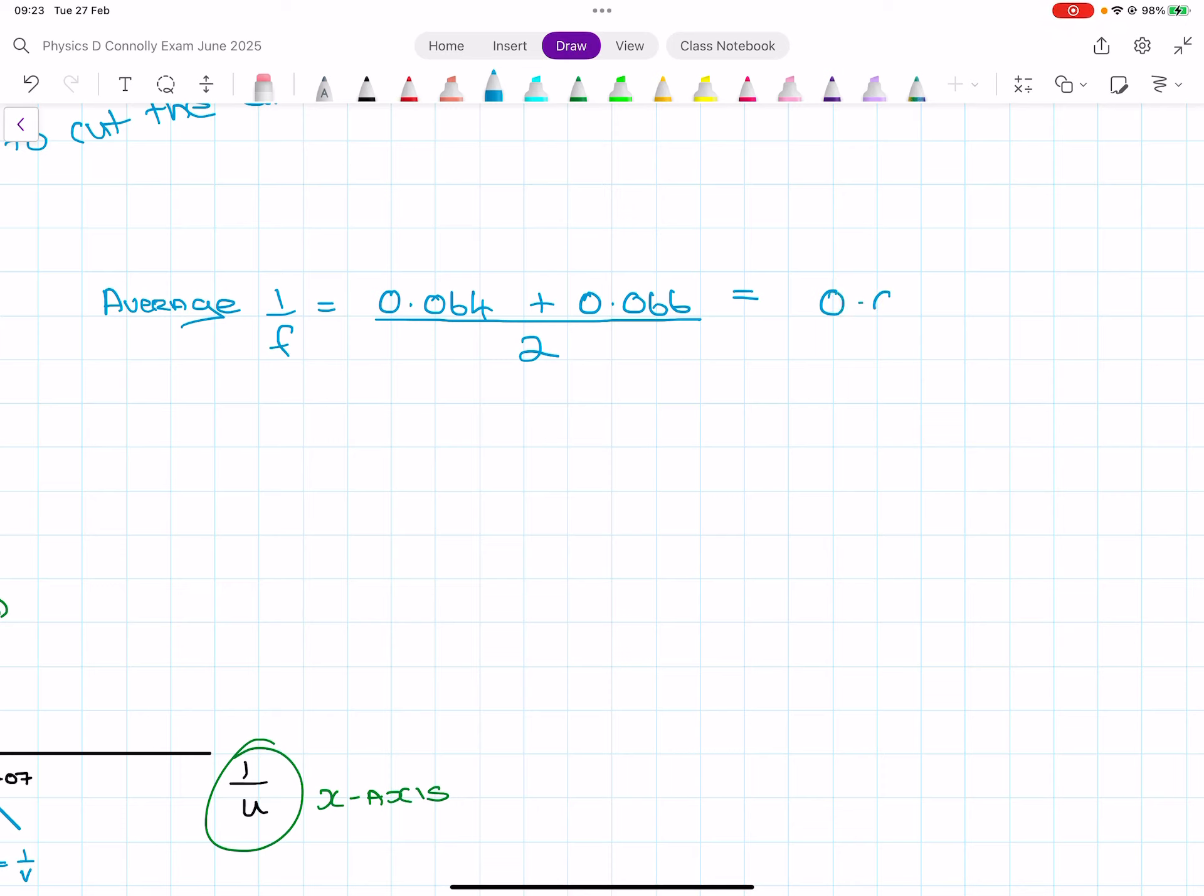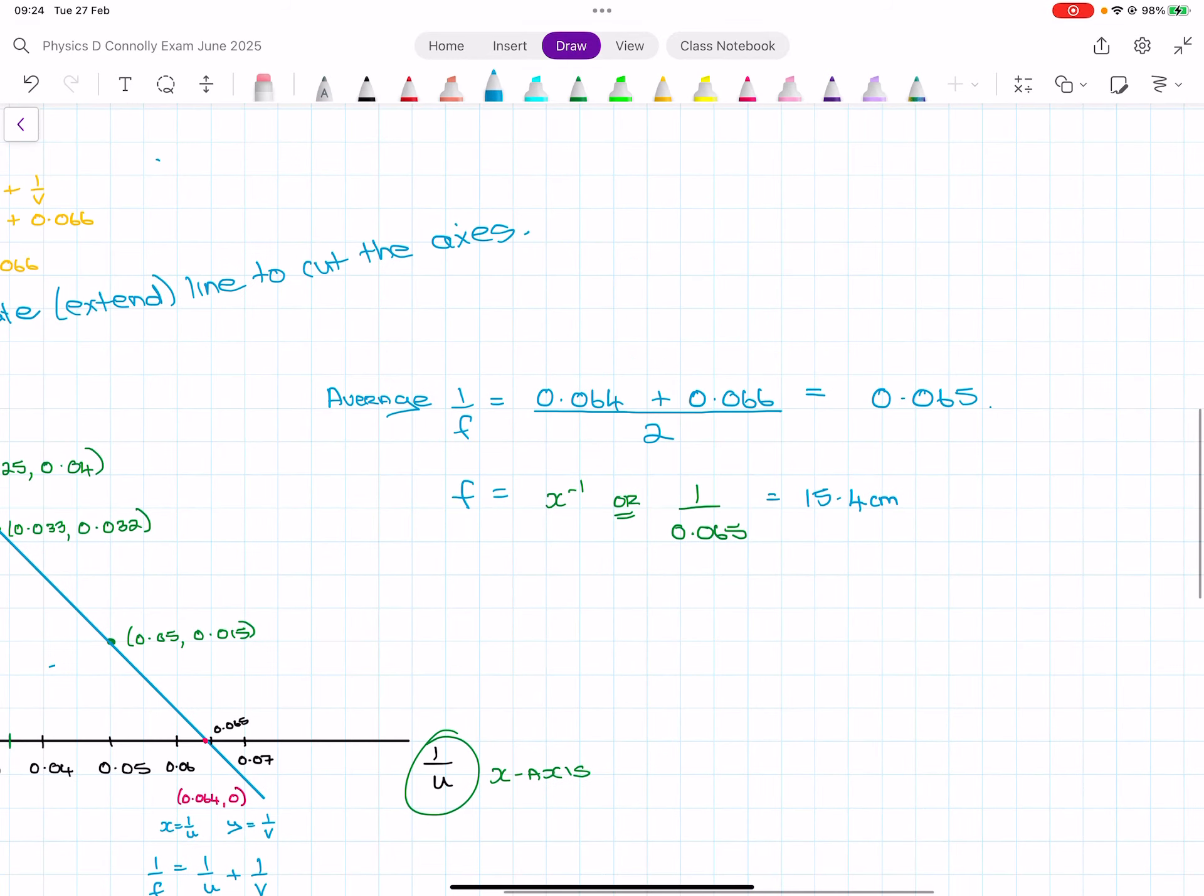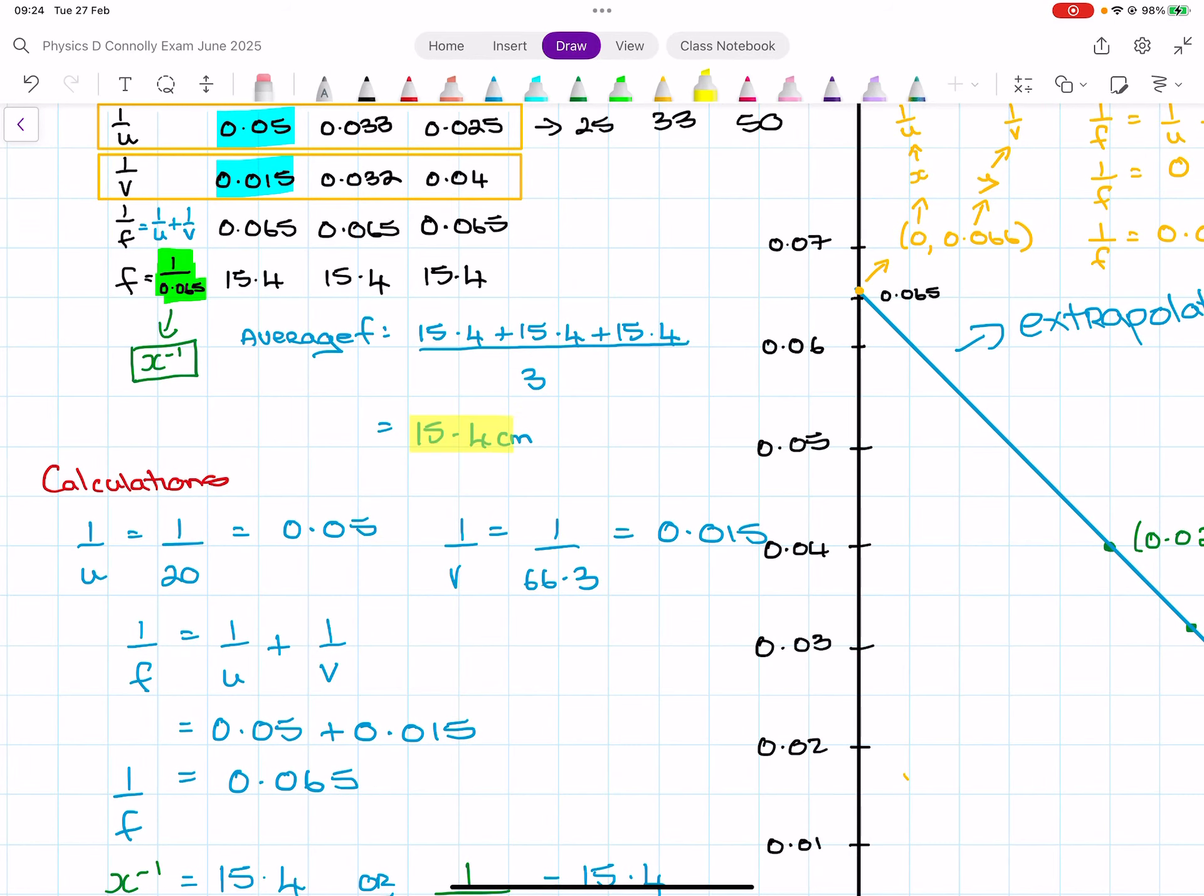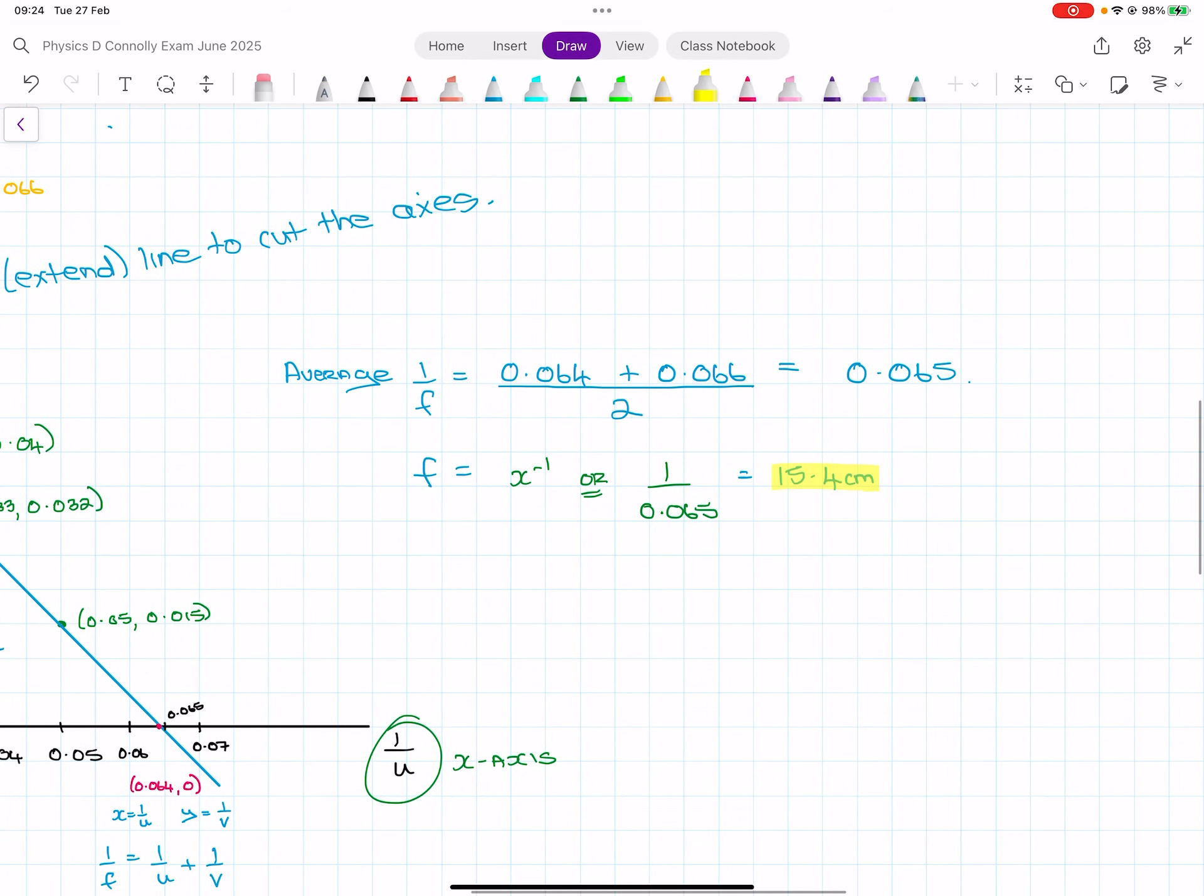And we don't want 1 over f, we want f. So we either use this button or we do 1 over 0.065. But regardless of how you do it, it's 1 divided by 0.065, which is 15.4 centimeters. Which I am pretty sure is what I got in my table - yes it is. So I got an average from my table of 15.4 centimeters and I got an average from my graph of 15.4 centimeters.